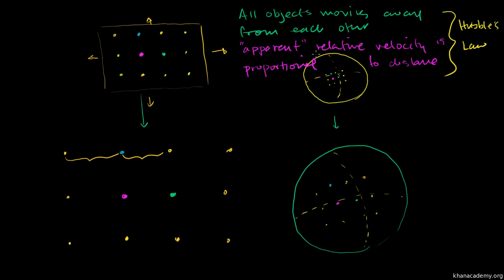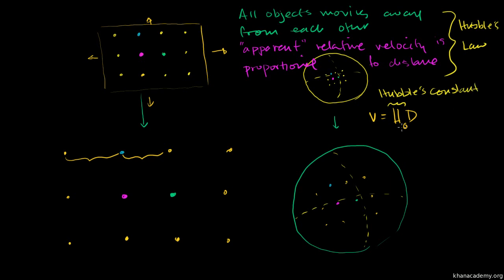Hubble came up with this by observing that the further out he looks, the more red-shifted objects are — not only were they moving faster away from Earth, but they seemed to be moving faster away from each other. From any point, such as Earth, the velocity something appears to be moving is going to be some constant times the distance it is away from the observer. This H here is called Hubble's constant.